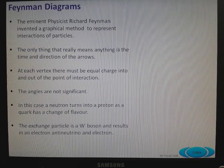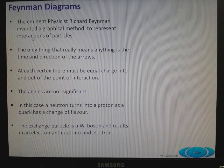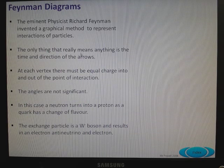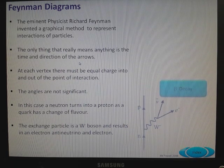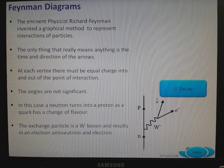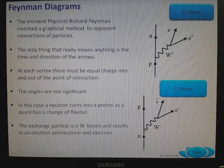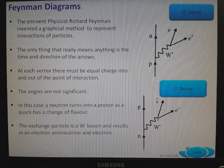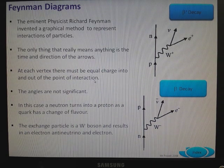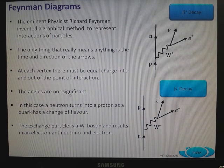Feynman diagrams — Richard Feynman invented a graphical method to represent the interactions of particles. The only things that really mean anything are the time and the direction of the arrows. At each vertex, there must be equal charge into and out of the point of interaction. Angles are not actually significant.